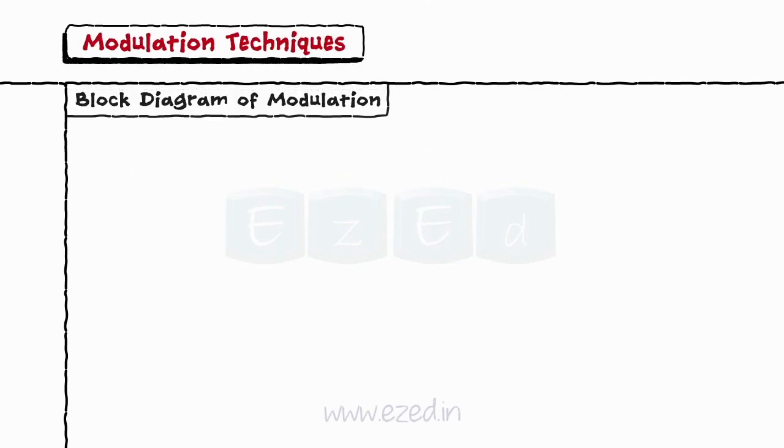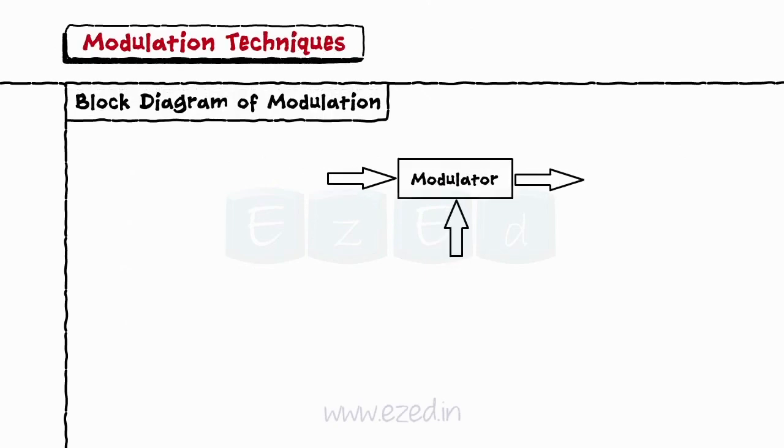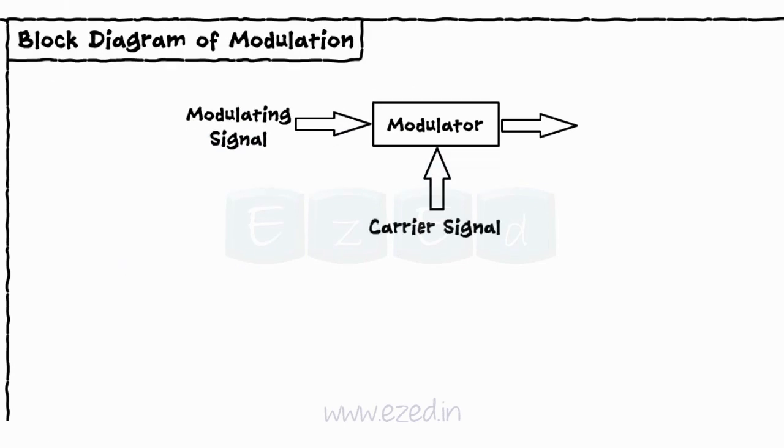Let's see the block diagram of modulation now. We have two inputs such as modulating signal and the carrier signal, and at the output we get a modulated signal.